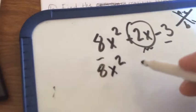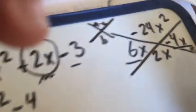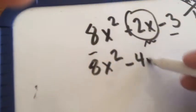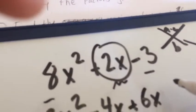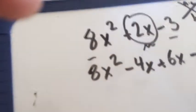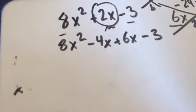8x squared minus, I choose the negative first, makes your life easier, the negative 4x plus the 6x we found. And then, subtract the 3, the last thing. Now, you have a 4 term polynomial that you can factor by grouping.